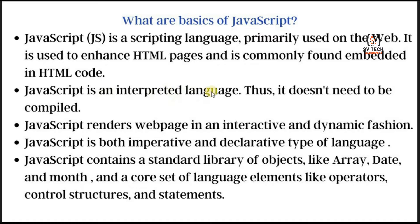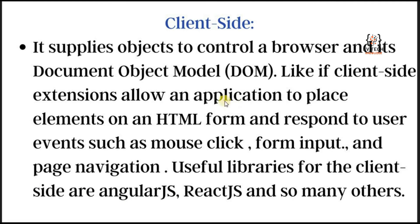It is used to enhance HTML pages and is commonly found embedded in HTML code. JavaScript is an interpreted language, thus it does not need to be compiled. JavaScript represents web pages in an interactive and dynamic fashion. JavaScript is both imperative and declarative type of language. JavaScript contains a standard library of objects like array, date, and a core set of language elements like operators, control structures and statements.